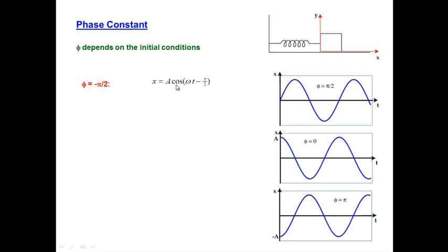If we consider a couple of different possibilities for phi, we'll see how the harmonic oscillator x versus t function shifts depending on the phase constant. If the phase constant is negative pi over 2, we see what looks like a sine wave. A pure cosine function shifted by a phase constant of pi over 2 gives us a sine wave. At time t equals 0, the displacement is equal to a cosine of minus pi over 2, so the displacement is 0, just as the graph shows.